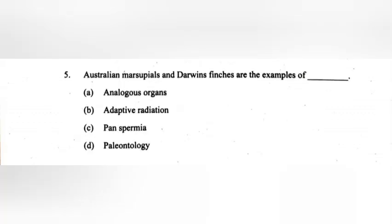5. Australian marsupials and Darwin's finches are examples of: A. Analogous organs, B. Adaptive radiation, C. Panspermia, D. Paleontology. Answer: B. Adaptive radiation.